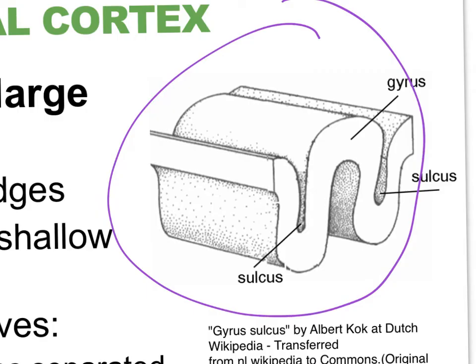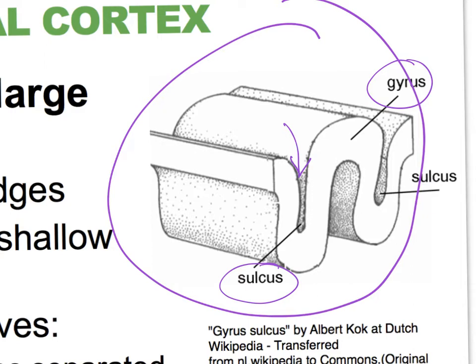Looking at that very convoluted layer, there are two major structures you need to become familiar with: the sulcus, which is the invagination, and the little bump we call the gyrus. The plural for sulcus would be sulci, and for gyrus it would be gyri.